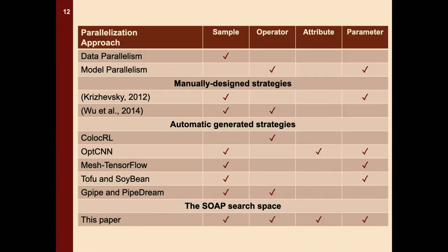This table summarizes the SOAP dimensions used by previous work. As you can see, most previous work tries to parallelize training by using a single or two dimensions in the SOAP search space. In this work, we are the first paper to parallelize in all SOAP dimensions, and we show that by considering a larger search space of parallelization strategies, we are able to find better solutions.